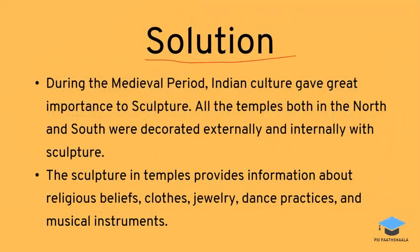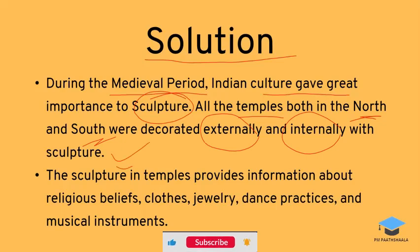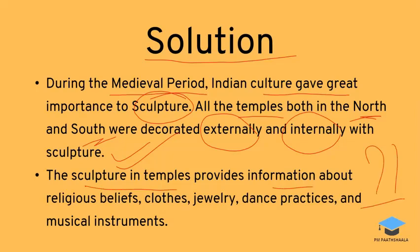Let's see the solution. During the medieval period, Indian culture was very important to the sculptures. As you can see, the temples — whether north or south — are externally and internally decorated with sculptures. The sculptures in temples give us information about religious beliefs in society, clothing systems, jewelry, dance practices, musical instruments, and the games they played. This depicts all about society.